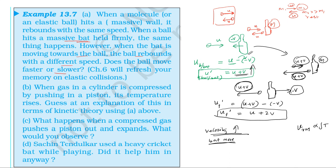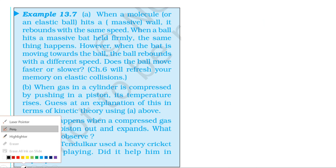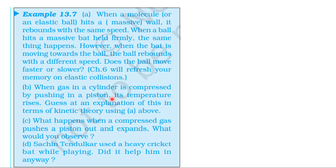Velocity is directly proportional to the square root of temperature. We already know that velocity increases with temperature. The ball rebounds with a different speed — the ball rebounds with speed u plus 2v. So the velocity of the ball increases when the bat moves towards it, meaning the ball moves faster.